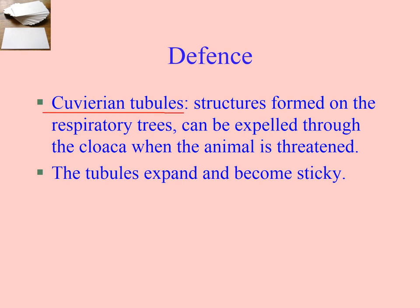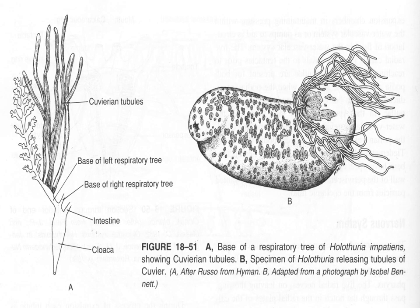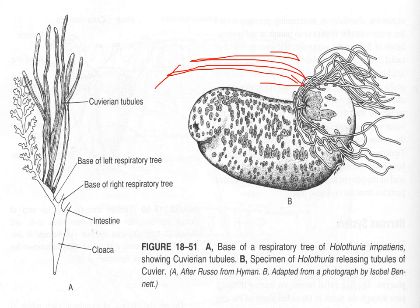They have things called Cuvierian tubules. You may have seen a Jackass episode in which sea cucumbers expel their Cuvierian tubules. When threatened, they blow out these sticky, spaghetti-like tubes from their rear end, which expand and become sticky and noxious. They have a noxious chemical on them, and if a fish gets one of these tubules stuck to it, it's very irritating and may even bind the fish up enough to kill it — there's a video link on the Moodle page. Here's a picture of what the Cuvierian tubules look like when expanded, washing back and forth around the sea cucumber as a deterrent for anything that would like to eat it.